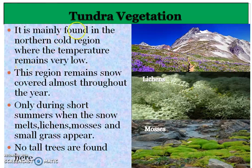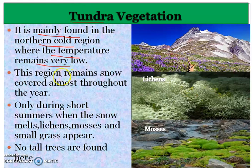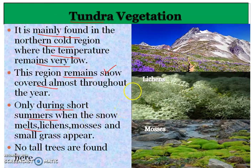Then we have the tundra region. Tundra is situated near the Arctic Circle in the north, where the temperature remains very low. Most of the time throughout the year, this area is covered by snow. Only during the short summer when the snow melts, some vegetation appears — like lichens and mosses. No tall trees are found in the tundra region.